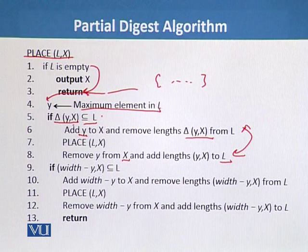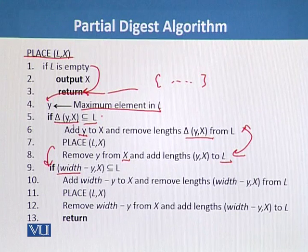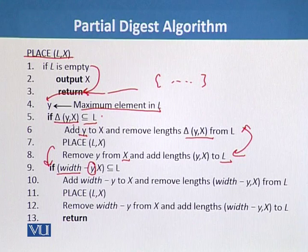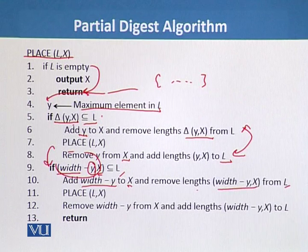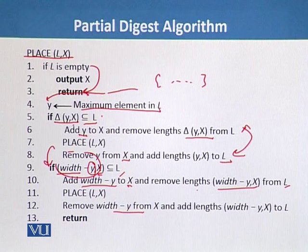Then we move to the second branch. If the first case does not apply, we calculate width minus y, where width is the maximum element in the subset. We then calculate the distance of (width - y) from x. If the calculated value is a subset of L, we add all those values to x and remove the distances from L. If not, we remove (width - y) from x and add it back — again, these steps are vice versa.